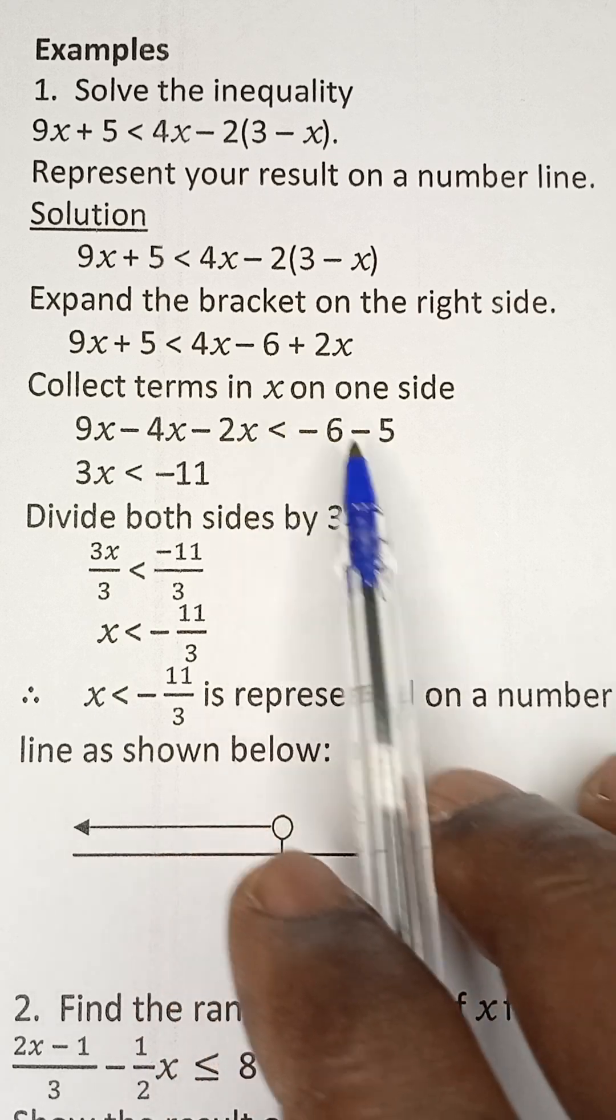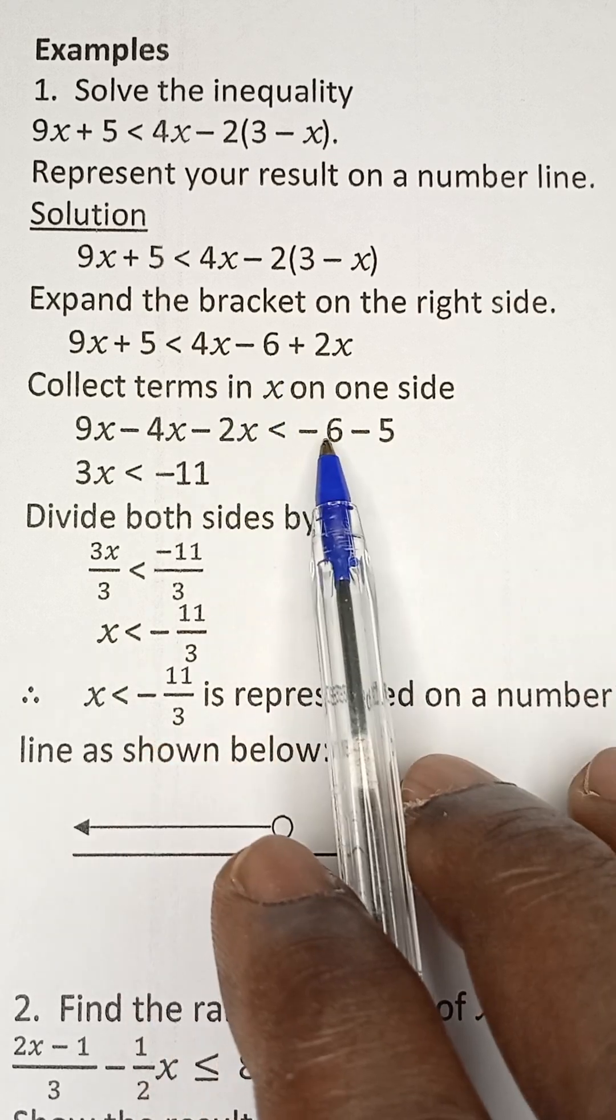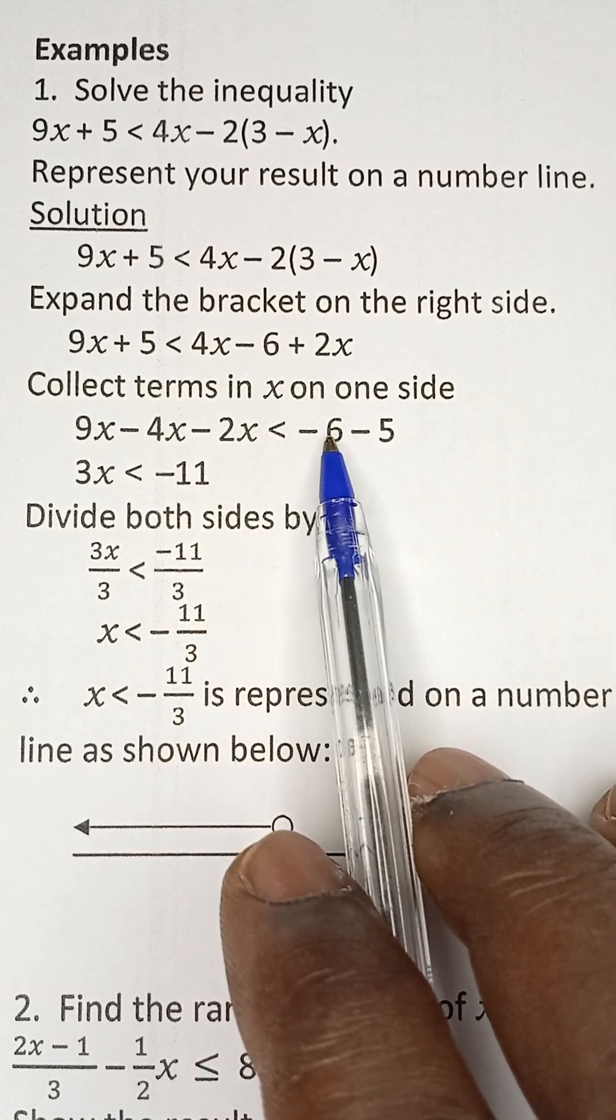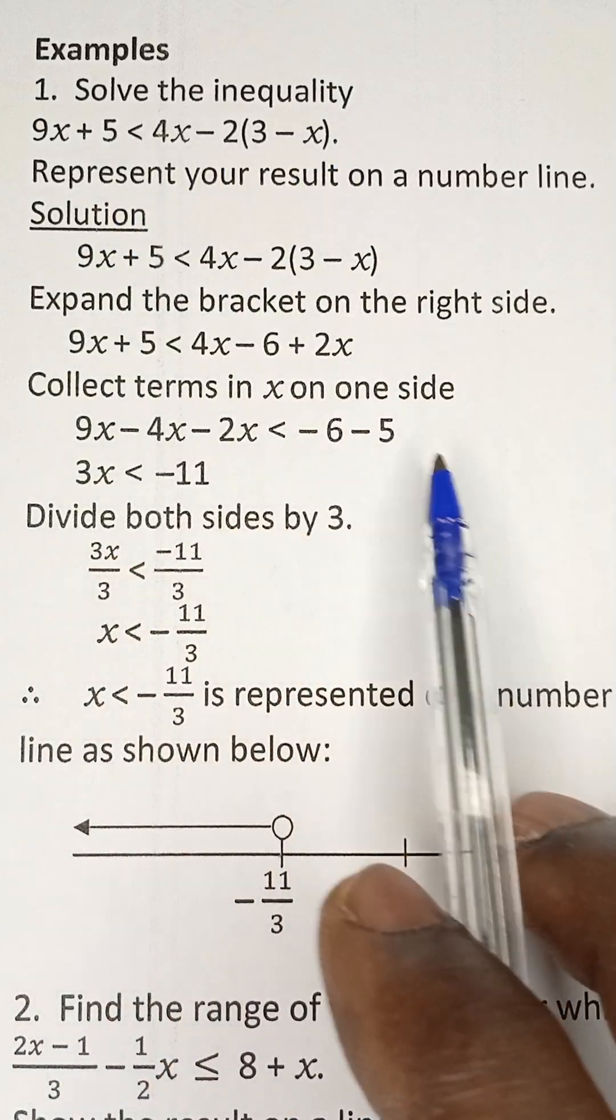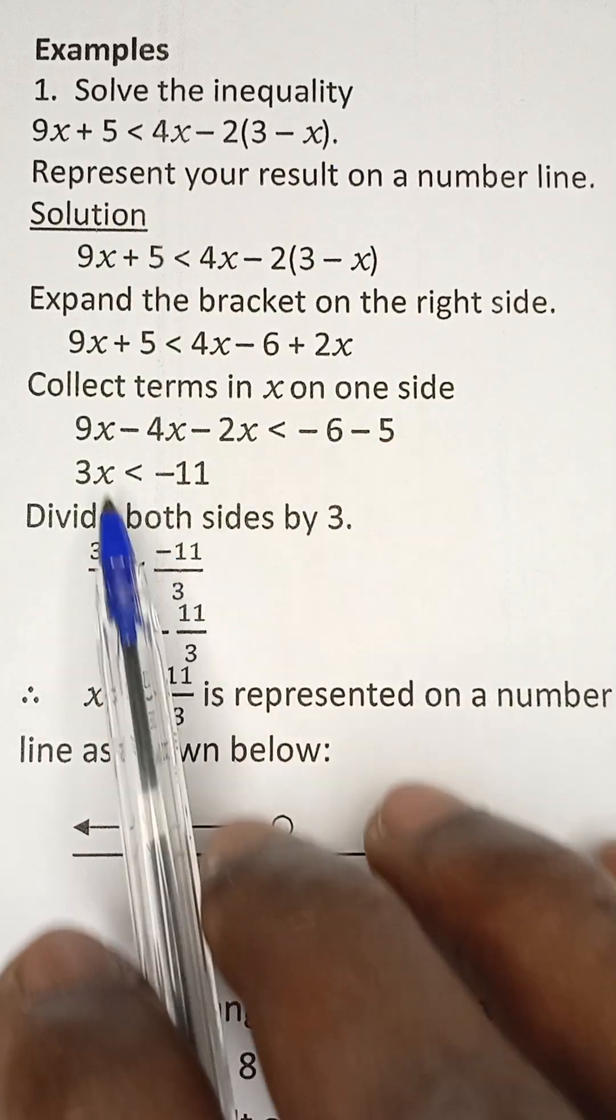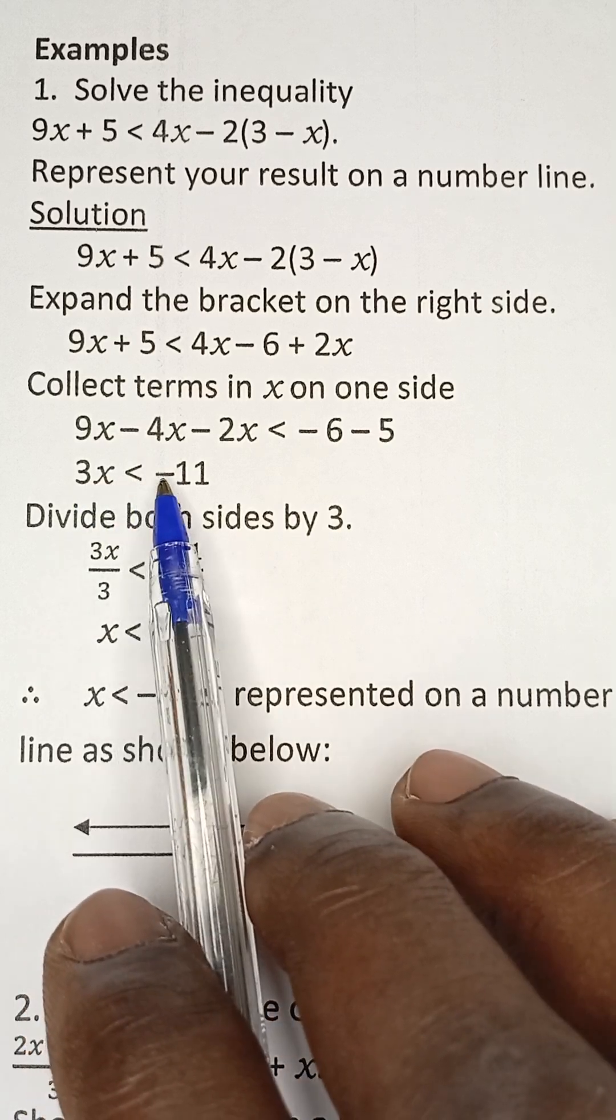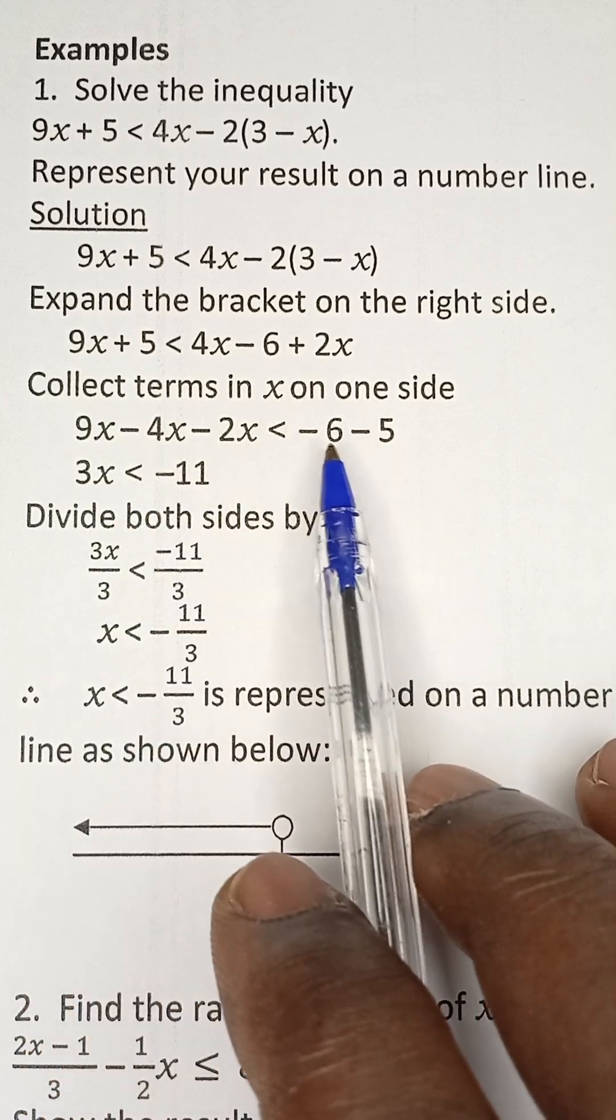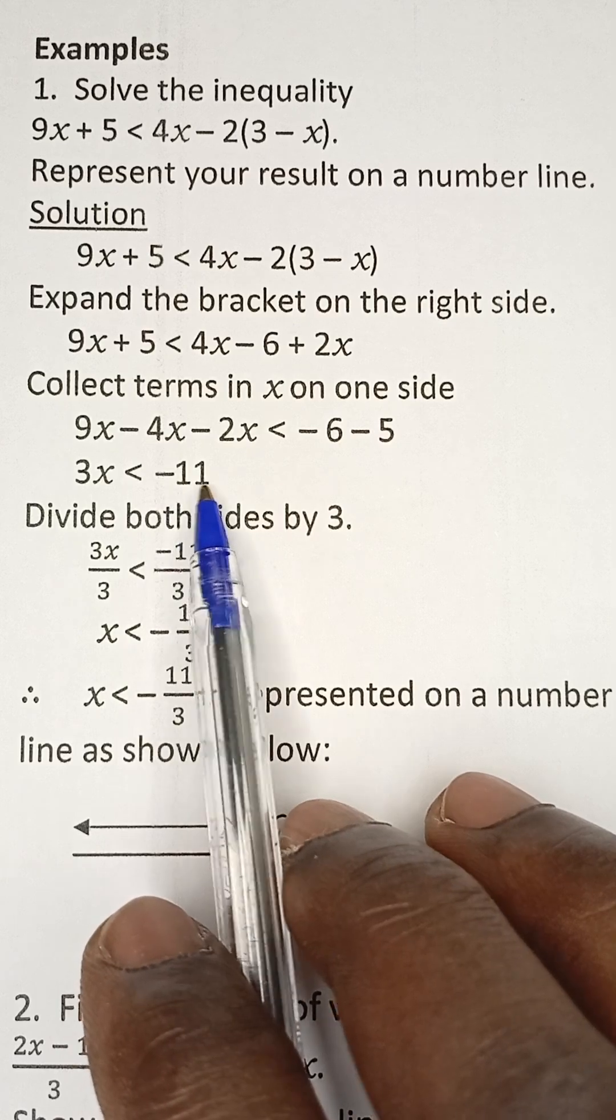And that will be less than or equal to, the negative 6 is already on this right-hand side. So negative 6 is here. And then positive 5 is coming to the right-hand side becomes negative 5. So I have 3x is less than minus 11. Minus 6 minus 5 is minus 11.